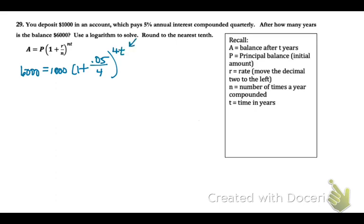So let's divide by 1,000. That'll leave us with 6. Let's add inside the parentheses. So you're going to get 1.0125. And now we can rewrite it as a logarithm. So log base 1.0125. The value is 6 equals 4t.